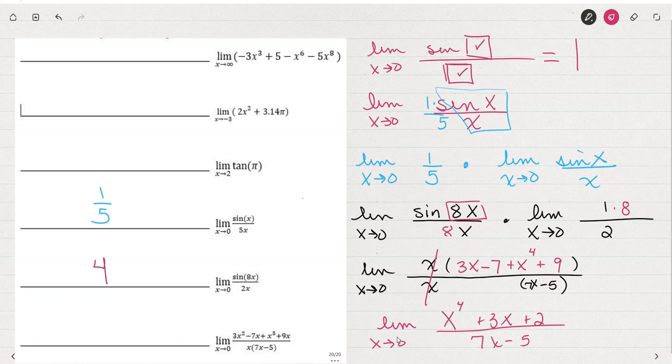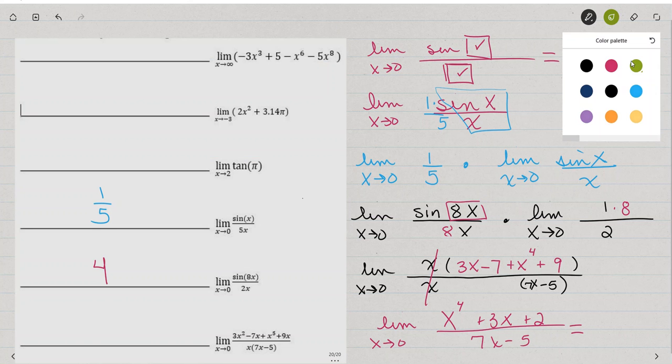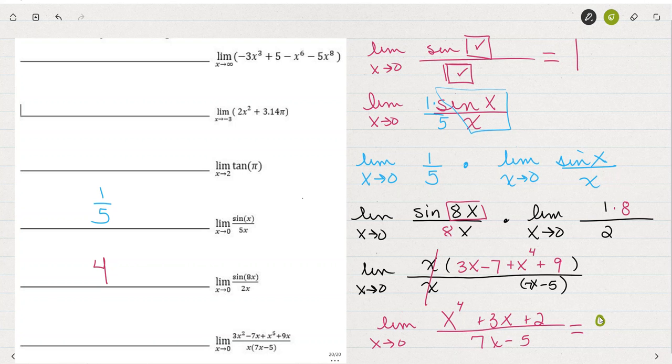And I'm left with the limit of x⁴ + 3x + 2 over 7x - 5 as x approaches 0. Using direct substitution, x⁴ becomes 0 because it's 0 to the 4th. 3 times 0 plus 2 over 7 times 0 minus 5. So it looks like I'm left with a 2 over -5 or just -2/5. And that's it.